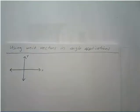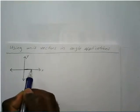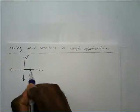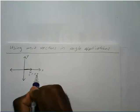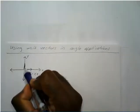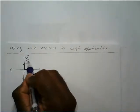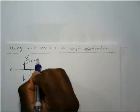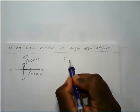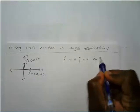Across the X axis, this is our I unit vector, which is equal to (1, 0). Vertically, it's our J unit vector, which is equal to (0, 1). So of course the I vector and J vector are both unit vectors.